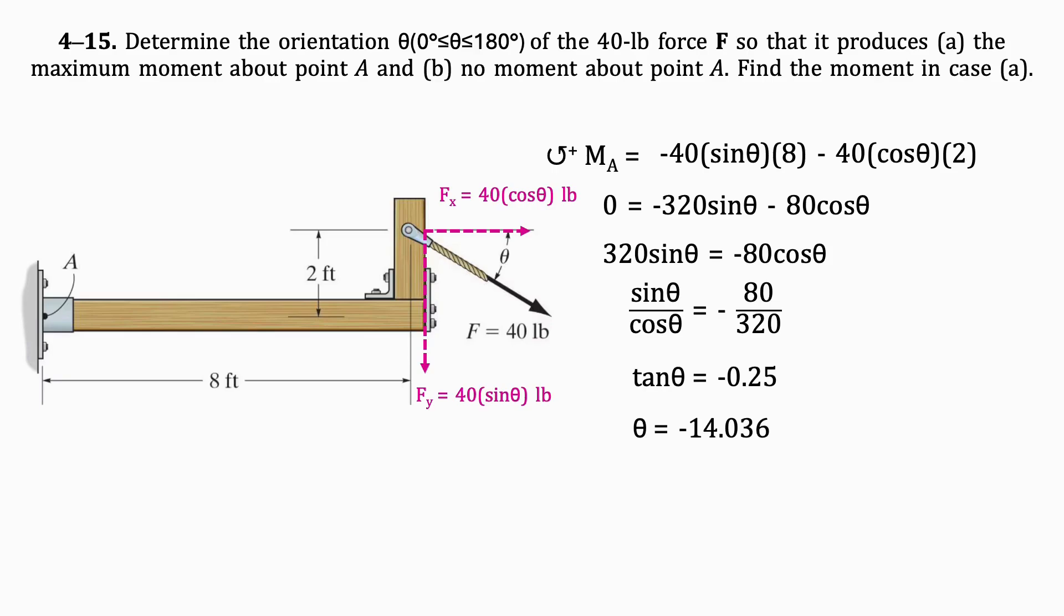Now, this is not our final answer. Let's take a step back and remember that the formula to find a moment is F times D times sine theta. Sine achieves its maximum value at 90 degrees, so we will subtract the angle we found from 90. This gives us 76 degrees, which is our final answer.